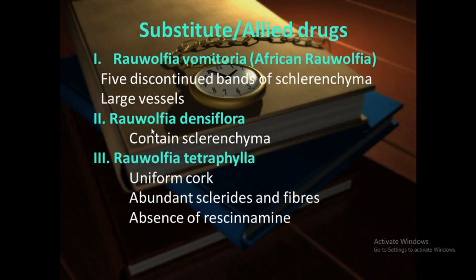Third substitute is Rauwolfia tetraphylla. This contains uniform cork — the first microscopic characteristic. Second, abundant scleroids and fibers. Third, absence of raubasine, which is present in Rauwolfia serpentina but absent in Rauwolfia tetraphylla. Also, cork cells in Rauwolfia tetraphylla are uniform, but in Rauwolfia serpentina the cork is stratified isodiametric cork. These are the differences used to distinguish between the two.